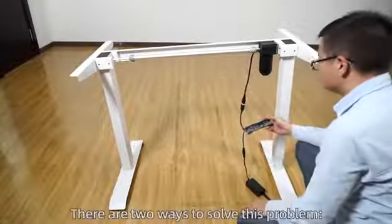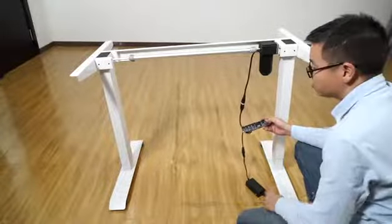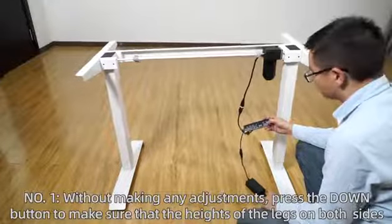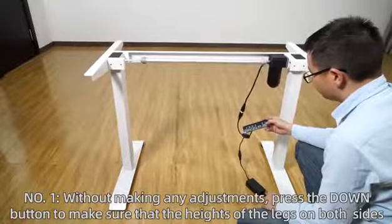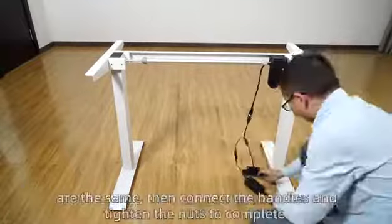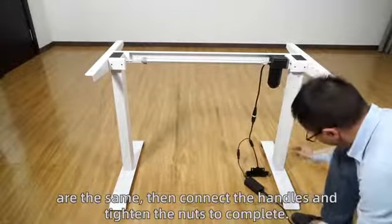There are two ways to solve this problem. Number one: without making any adjustments, press the down button to make sure that the height of the legs on both sides are the same, then connect the handles and tighten the nuts to complete.